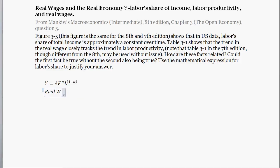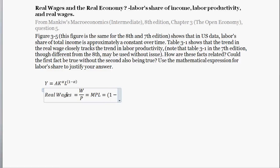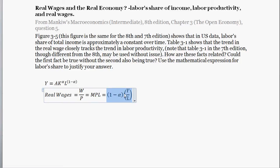Next up, real wages. That's equal to W divided by P, which is equal to the marginal product of labor, which is equal to (1 minus alpha) times average productivity — Y divided by L. We've found this in previous videos; you can take these things as given. Real wages equals the marginal product of labor, which equals this relationship.